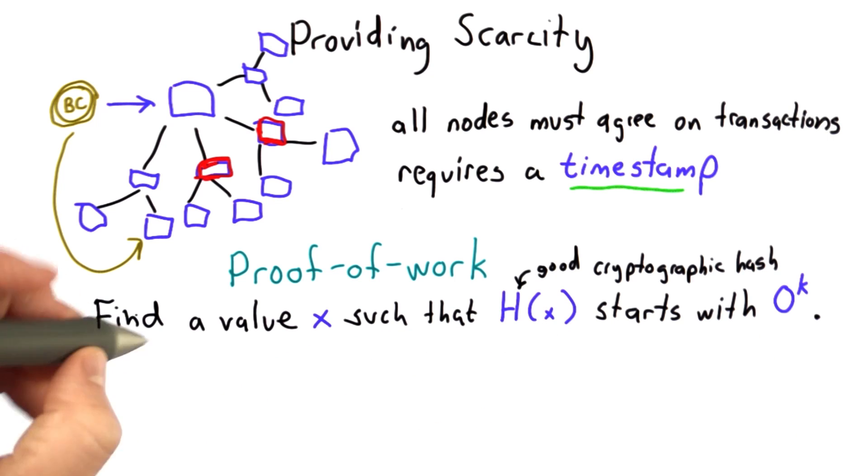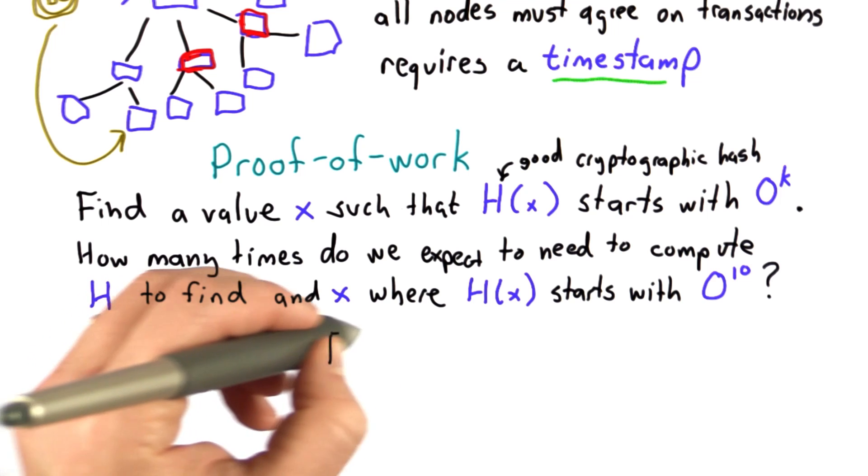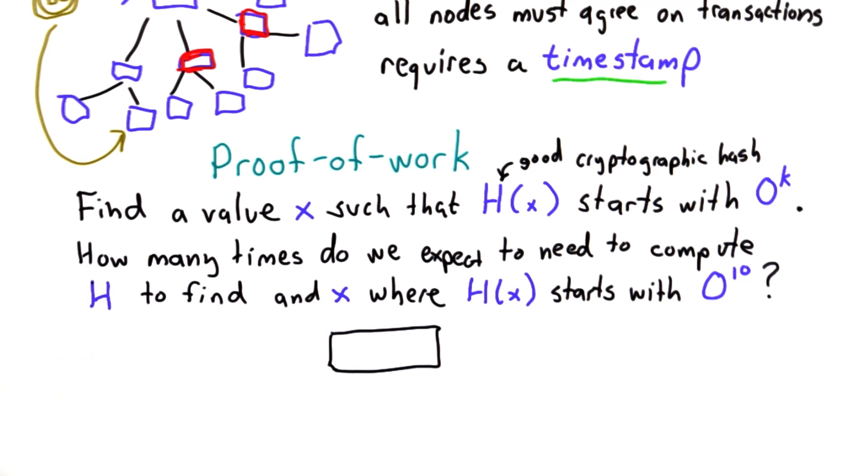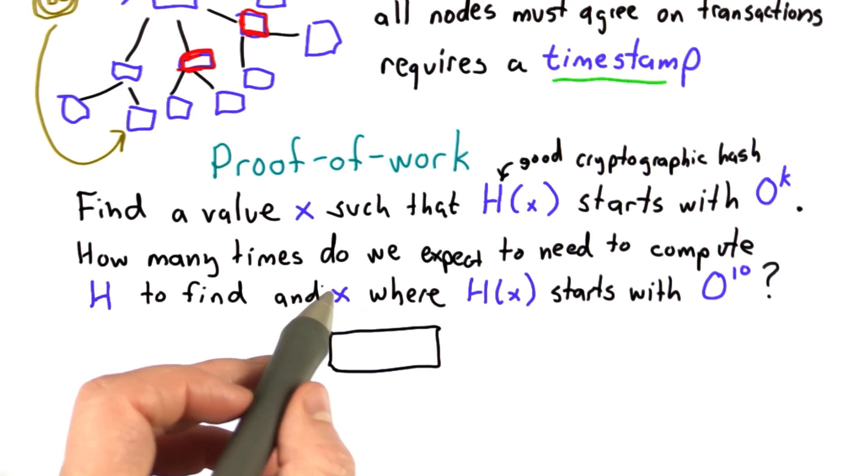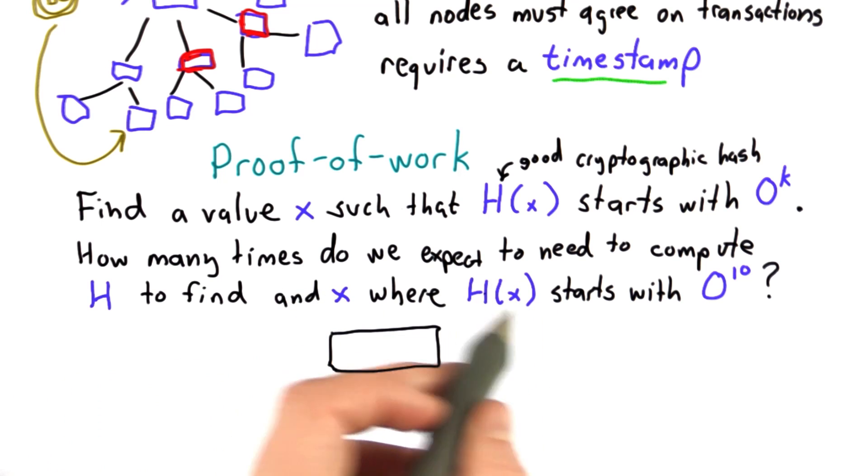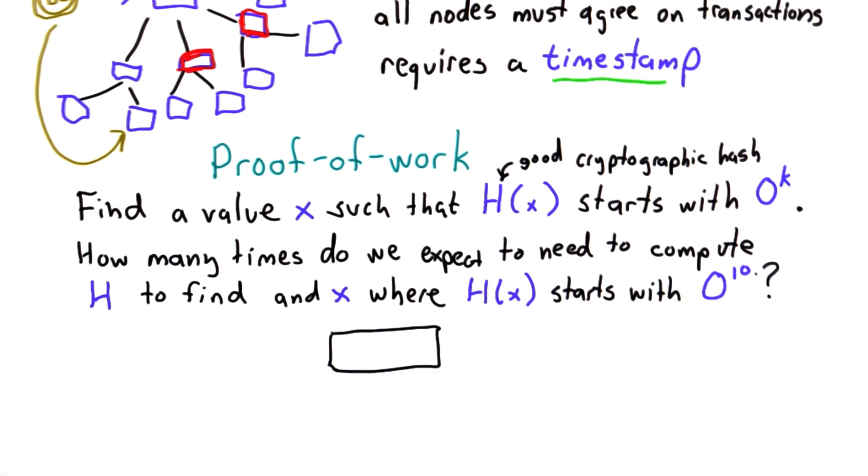So how much work is that? So how many times do we expect to need to compute the hash function h in order to find a value of x where h of x starts with 0 to the 10, starts with 10 consecutive zeros.